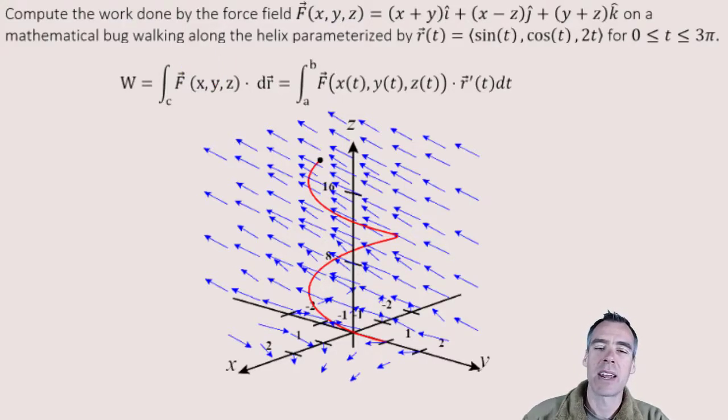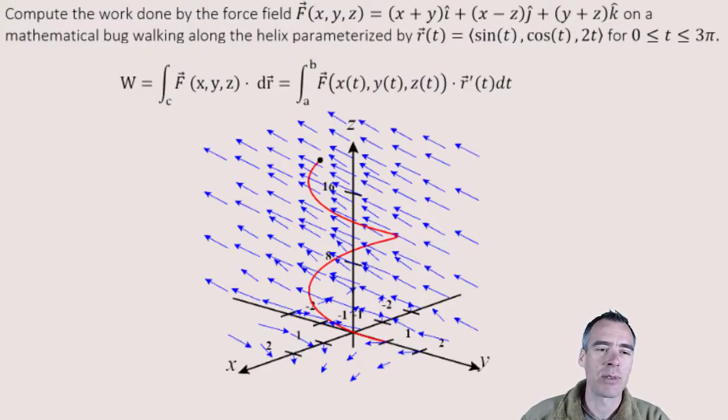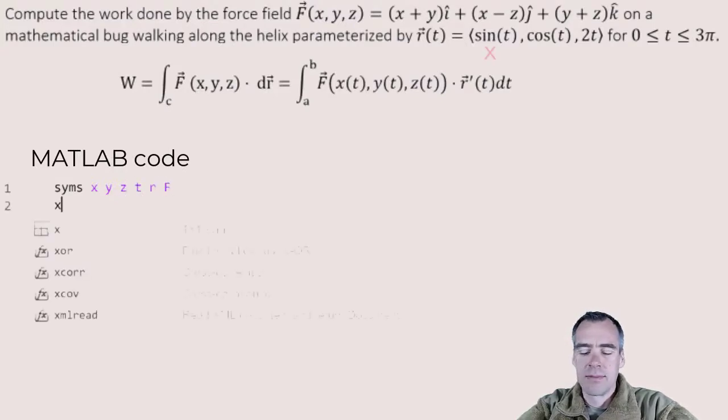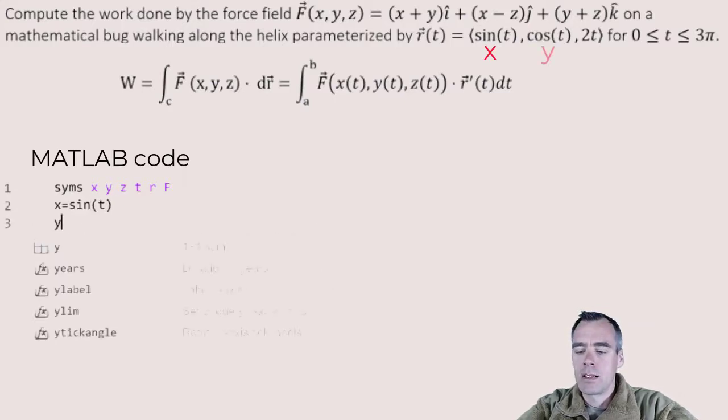Now honestly, this isn't too bad because we basically have all this stuff. It's just a matter of plugging it into MATLAB at this point. Alright, so first thing we're going to do in MATLAB is go ahead and define our variables. We've got X, we've got Y, Z, we've got T, R, and F. And our X is going to be sine of T. And our Y is going to be cosine of T. And our Z is 2 times T.